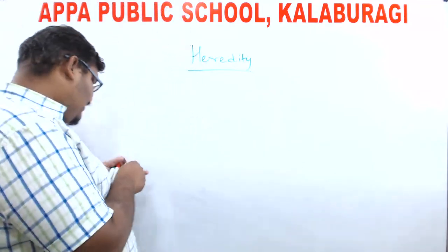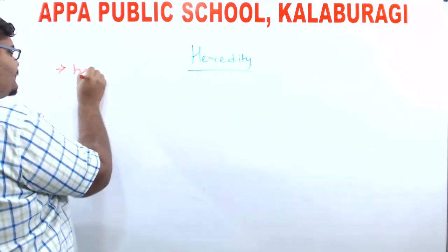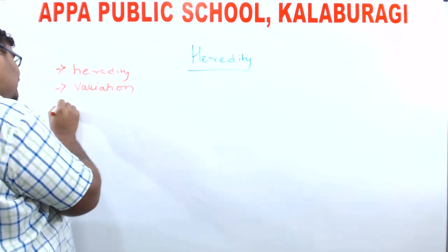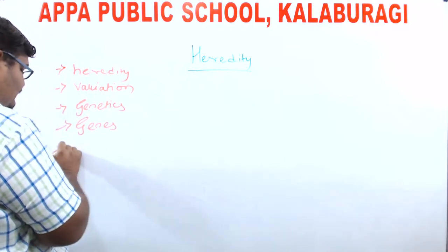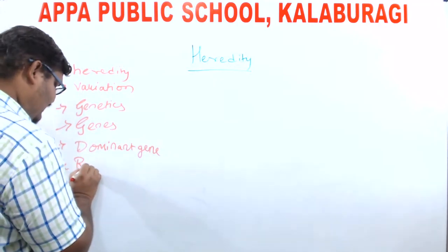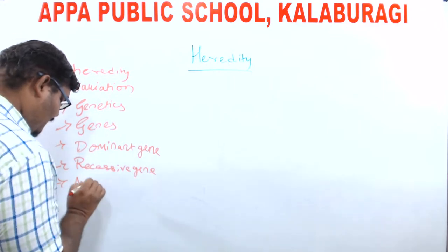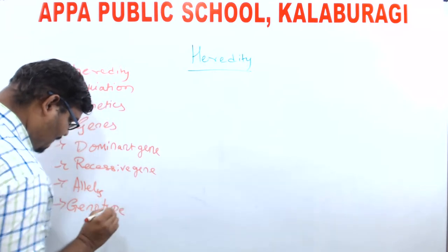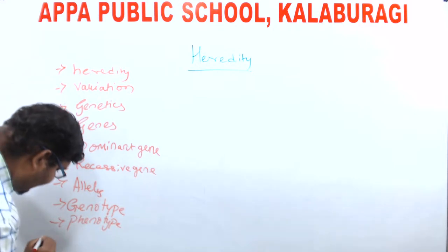Then what is variation? We are going to deal with certain definitions. The terminologies we will cover are: heredity, variation, genetics, genes, dominant gene, recessive gene, allele, genotype, phenotype, homozygous, and heterozygous.